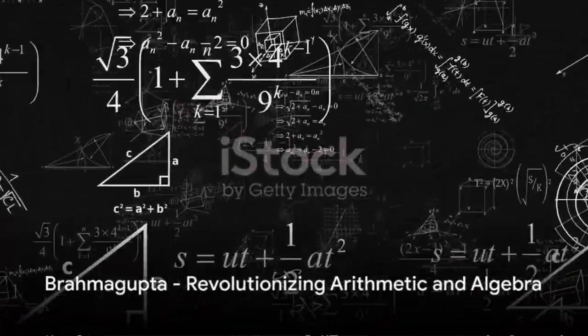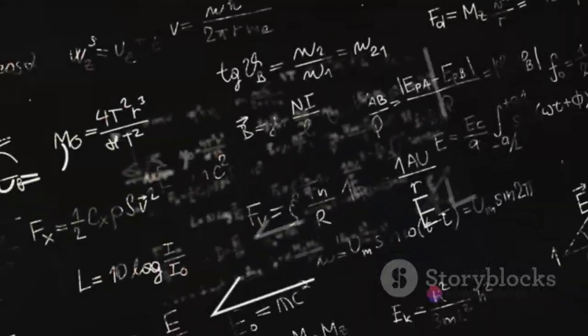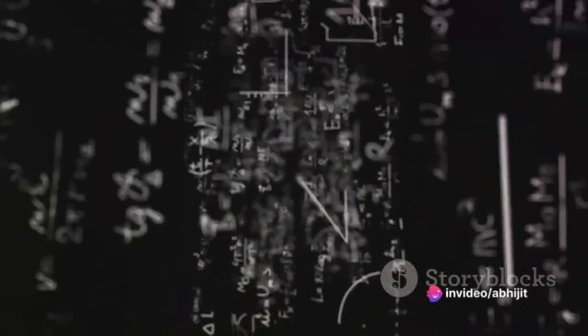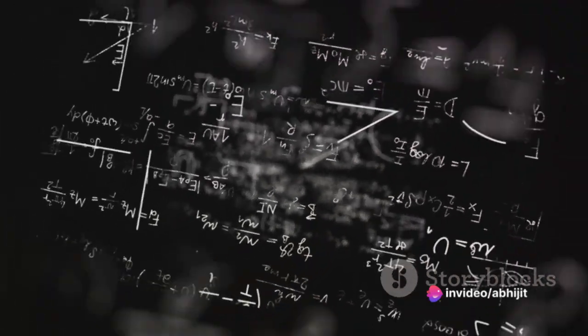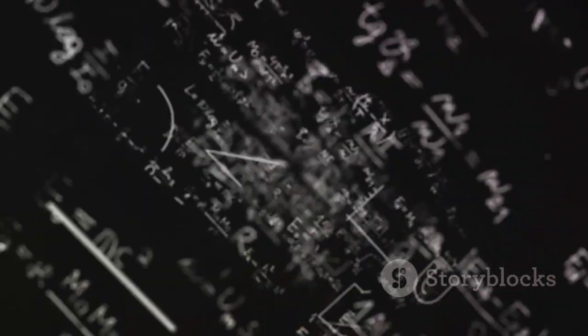Next, we have Brahmagupta from the 7th century, who made groundbreaking contributions to arithmetic and algebra. He is best known for introducing the concept of negative numbers and zero into arithmetic, an idea that revolutionized mathematics.